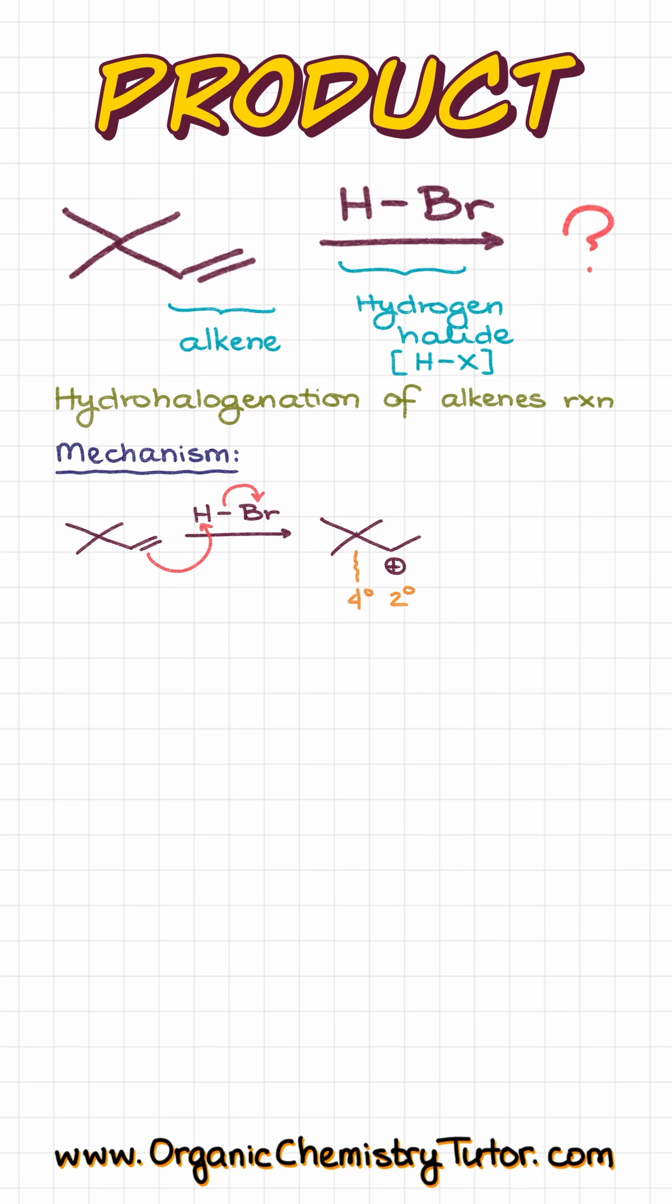Now, here is something very important. Right next to this secondary carbocation, we have a quaternary position, which means that if a carbocation can rearrange to give a more stable carbocation, it absolutely will. And if we can go from the secondary to something more stable, we are going to see that here as well.